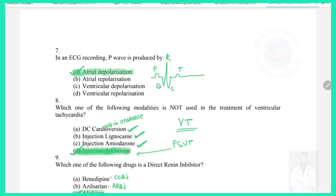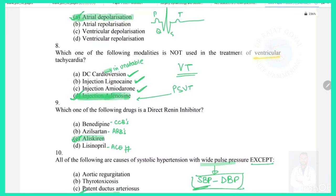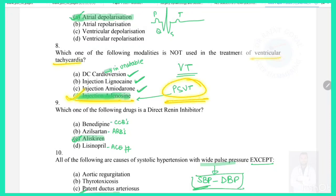Question 8: Which of the following is not used for treatment of ventricular tachycardia (VT)? DC cardioversion is given for unstable patients; injection lignocaine and injection amiodarone are also given in VT. However, injection adenosine is not given in VT — it is specifically given for PSVT. So the answer is adenosine.